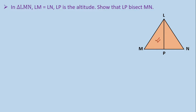Now, in triangle LMP and LNP, we have LM equals to LN, and as LP is the altitude, so the angle LPM and angle LPN is equals to 90 degrees.